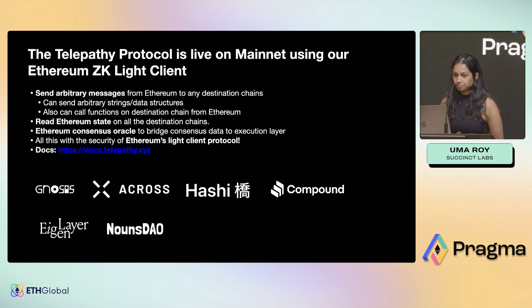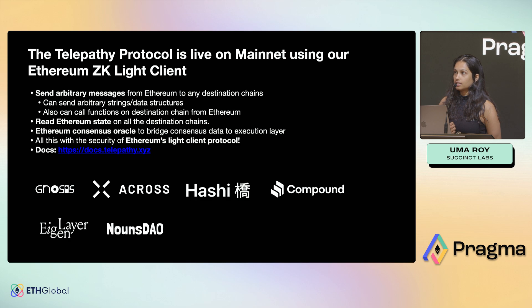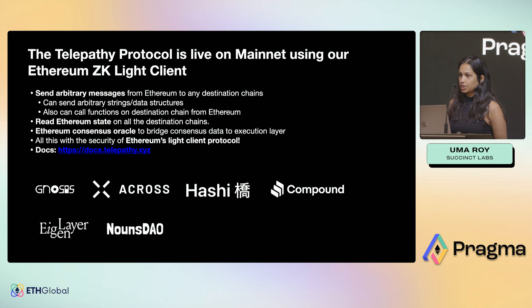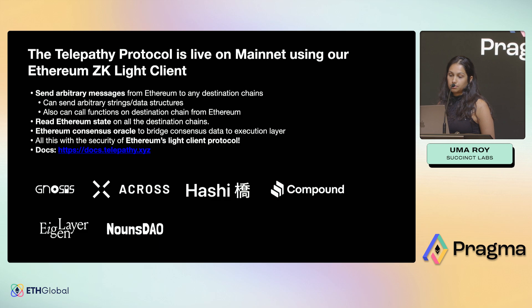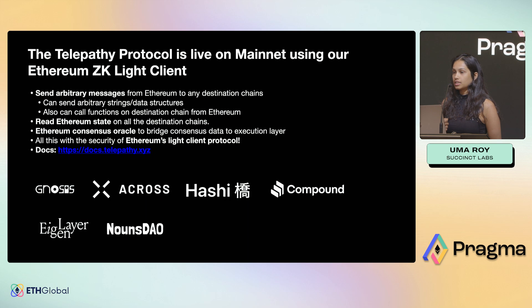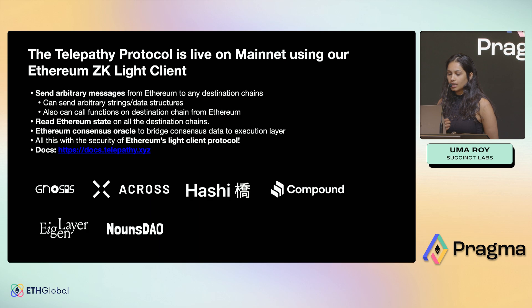With this Ethereum light client, we built the Telepathy protocol, which has been live on mainnet since March. There are a few interesting things you can do with it. You can send arbitrary messages from Ethereum to any chain — Polygon, Avalanche, Gnosis chain — because you run an Ethereum light client on those other chains. Once you know the state of Ethereum on another chain, you can verify whether messages have been sent, enabling arbitrary message passing. It's also useful for bridging Ethereum's consensus layer to its execution layer to get validator balance and status information, which is valuable for staking protocols.